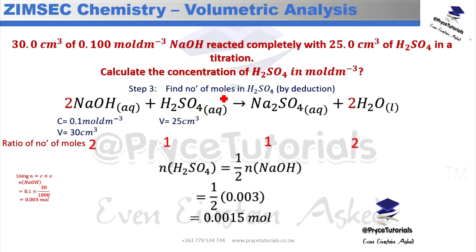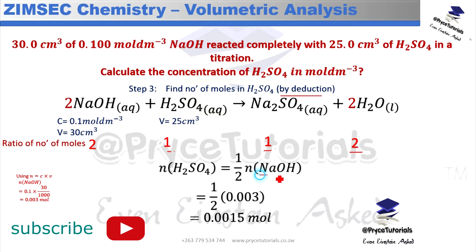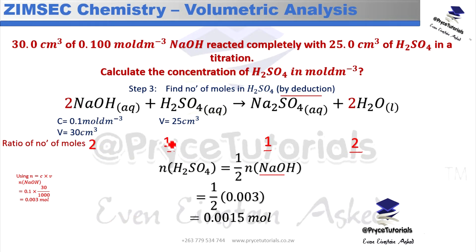The third step is to find the number of moles of H₂SO₄ using the molar ratio. From the balanced equation, the ratio of NaOH to H₂SO₄ is 2:1. So the number of moles of H₂SO₄ is half the number of moles of NaOH. That gives us 0.003 × ½ = 0.0015 moles.